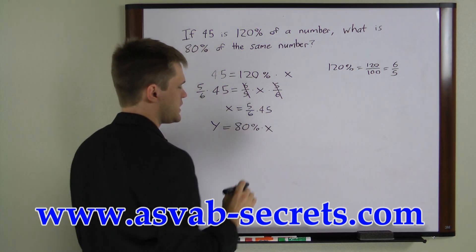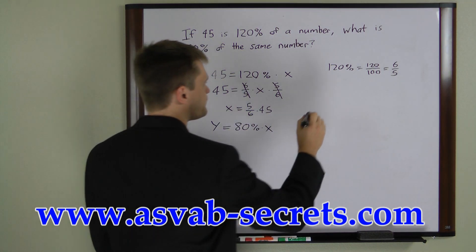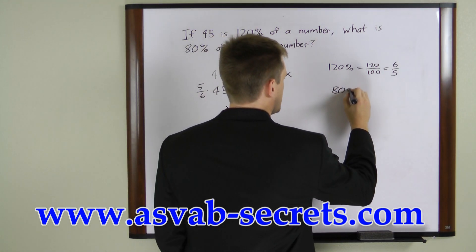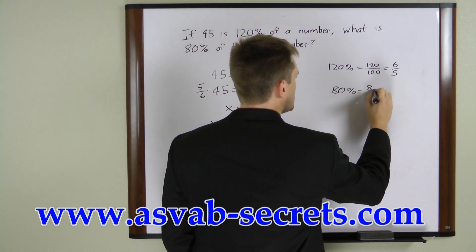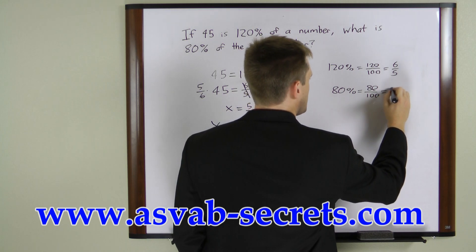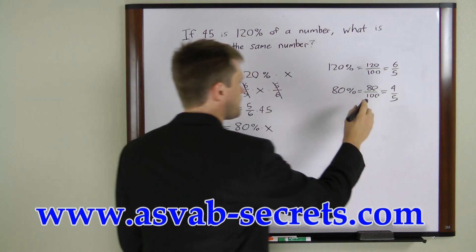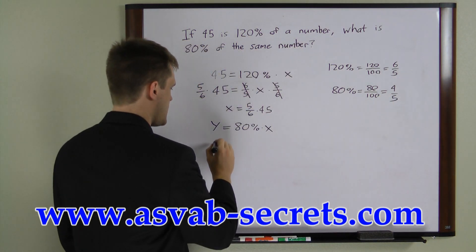Now let's convert 80% to a fraction also. 80% equals 80 over 100, which is the same as 4 over 5. Now we can substitute that back into here.